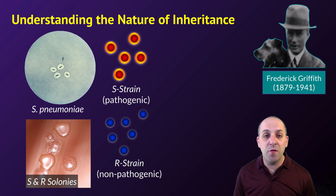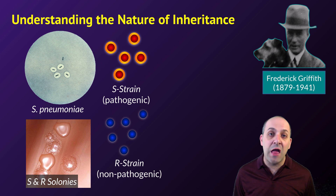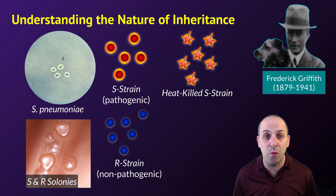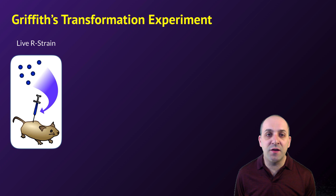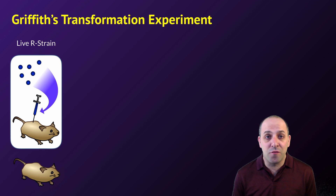The S strain forms smooth colonies and the R strain does not. Griffith's experiment involved live S strain, live R strain, and heat-killed S strain bacteria that he was injecting into mice to see what would happen. In the first instance, Griffith injected mice with live R strain bacteria. The R strain is not pathogenic, and unsurprisingly, the mice survived — which is exactly what we would expect.